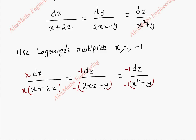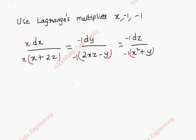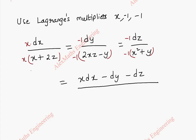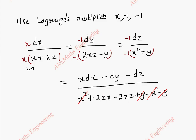Using the ratio property, adding all the numerators gives x·dx - dy - dz. For the denominator, multiplying x inside: x² + 2zx. Multiplying -1 inside the second term: -2xz + y. Multiplying -1 inside the third term: -x² - y. Now x² - x² cancels, y - y cancels, and 2xz - 2xz cancels — the entire denominator becomes 0.